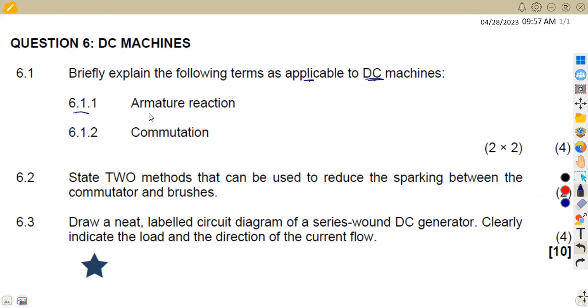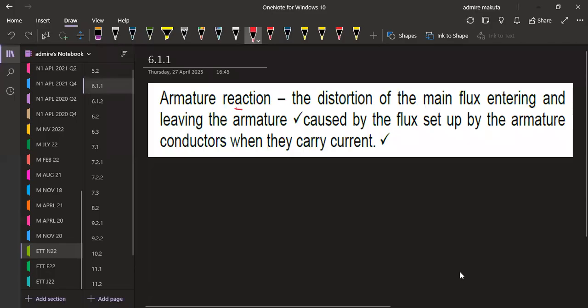Which is briefly explaining the following terms as applicable to DC machines. So we've got 6.1.1, that is the armature reaction. So what is armature reaction in DC machines or relevant to DC machines?